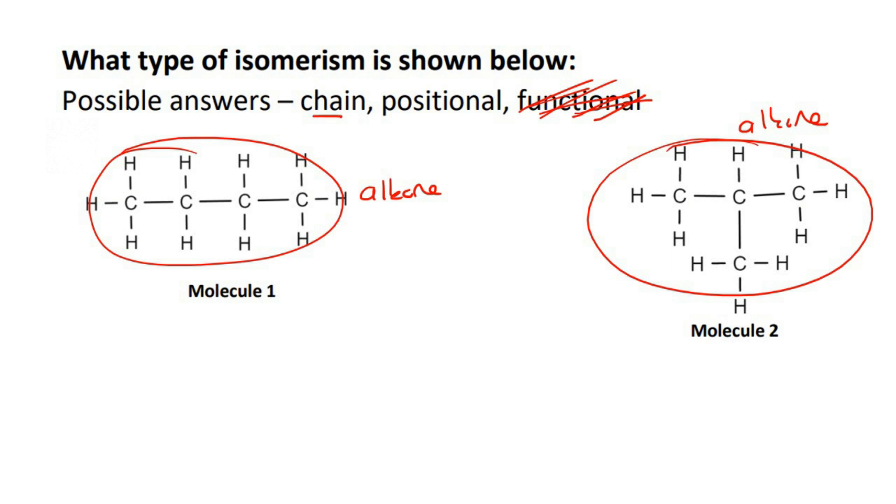Because it's not functional, it could either be positional or chain. If we look at the main chain, this one has one, two, three, four carbons in the main chain. This one has one, two, three in the main chain.